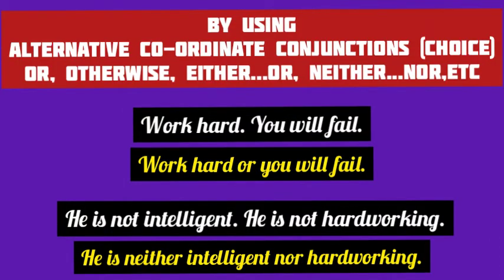Alternative or disjunctive coordinate conjunctions indicate a choice between two alternatives. Or, otherwise, else, either...or, neither...nor are examples. 'Work hard' and 'you will fail' are the two simple sentences in the first example, indicating a choice between two alternatives. So by using the alternative coordinating conjunction 'or,' we combine them into a compound sentence.